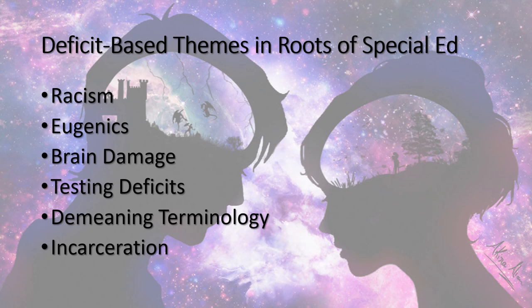In this lecture, we're going to be looking at some themes that relate to the deficit paradigm that has been part of special education for over 100 years: racism, eugenics, brain damage, testing deficits, demeaning terminology, and incarceration. I want to say right up front that I'm not suggesting that the current state of special education includes these things, but rather that they have their roots in these things in history. So let's take a look at some of them.